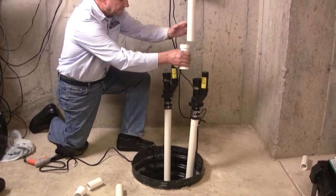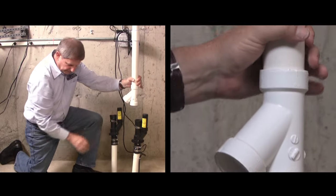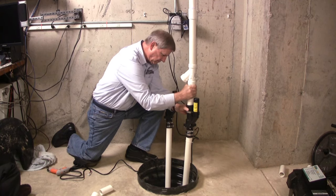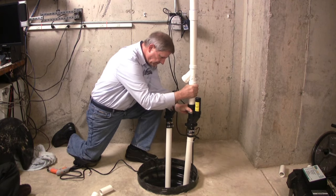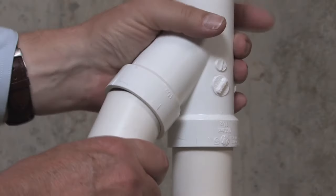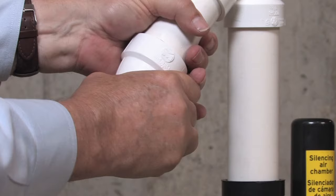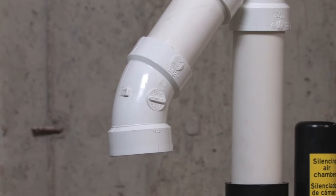Next attach the Y connector like this, then attach PVC pipe that will go to the main pump, and then attach the additional PVC pipe and 45-degree elbow that go to the backup pump.